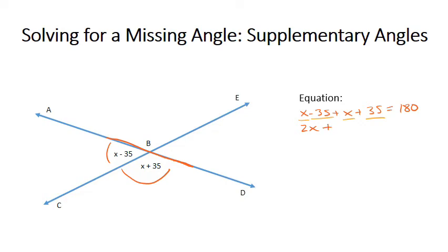So then I've got 2x plus 0 equals 180. Well, that's really just 2x equals 180. And so now I can rewrite this: 180 divided by 2 to find my x value, which is going to give me 90.